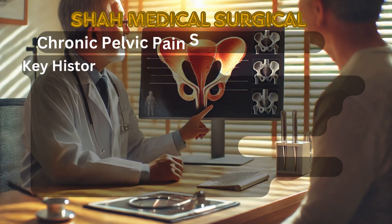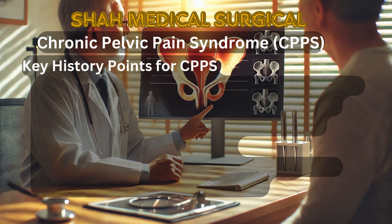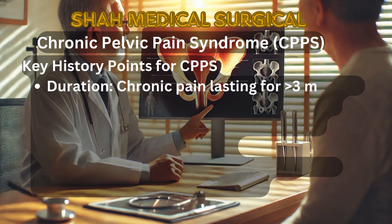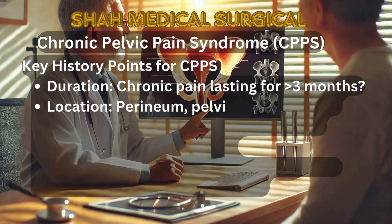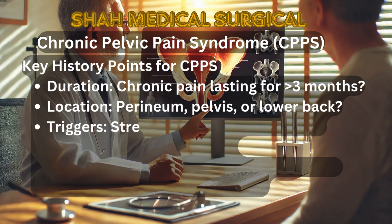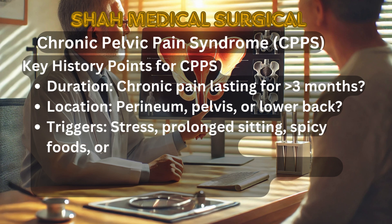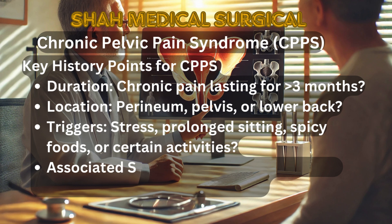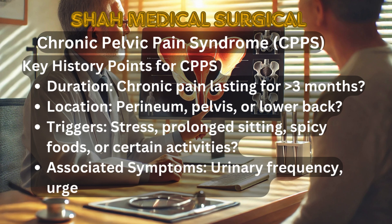Chronic pelvic pain syndrome. Key history points include: 1. Duration of pain — chronic pain lasting more than 3 months. 2. Location — pain localized to the perineum, pelvis, or lower back. 3. Triggers — activities such as prolonged sitting, stress, or certain foods like spicy foods can exacerbate symptoms. 4. Associated symptoms — patients may report urinary frequency, urgency, or sexual dysfunction.